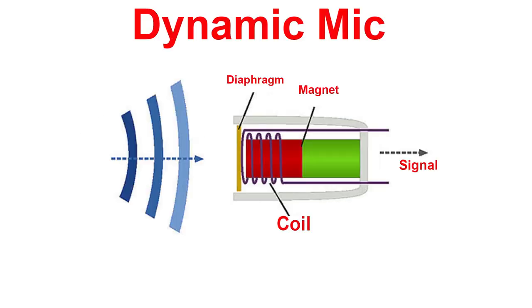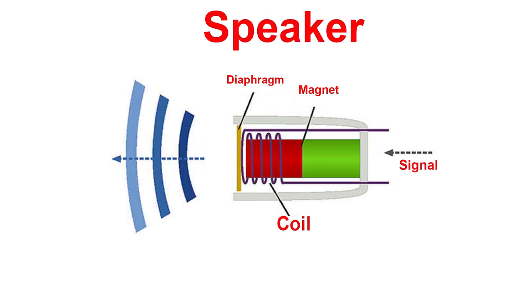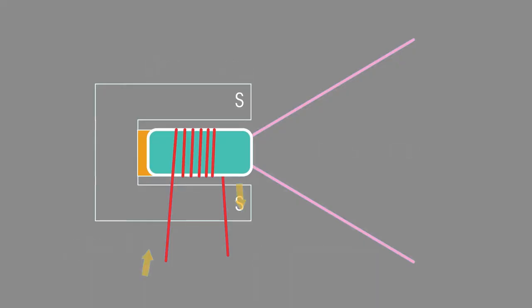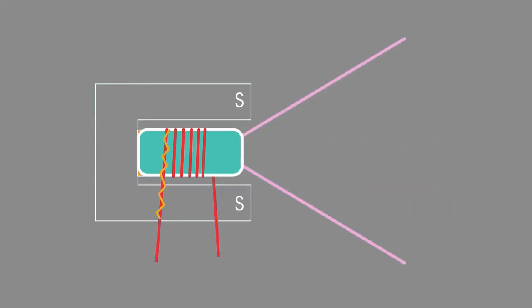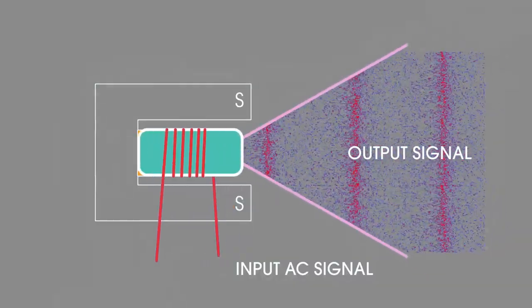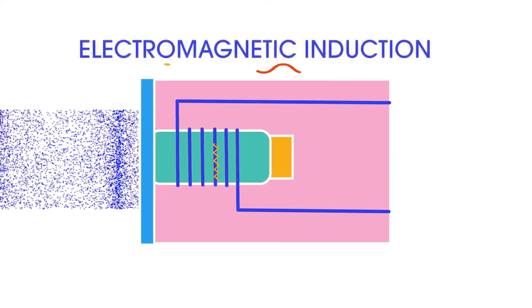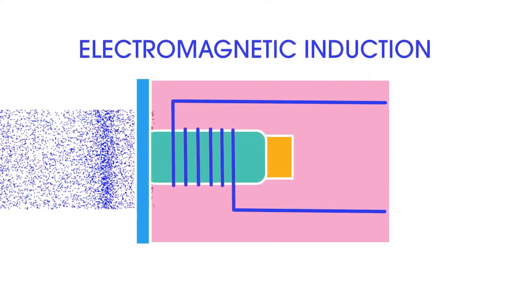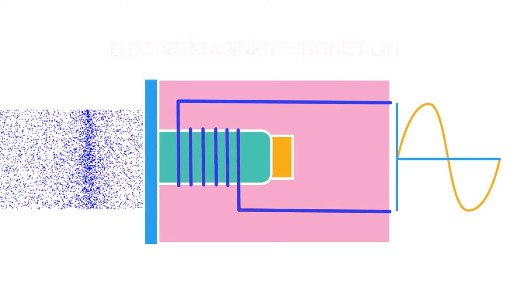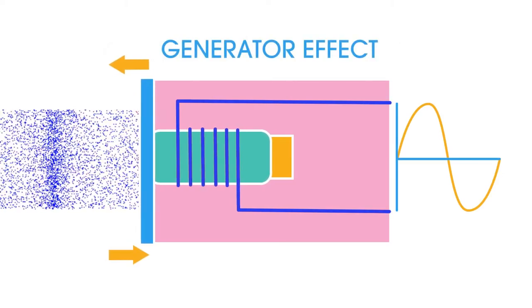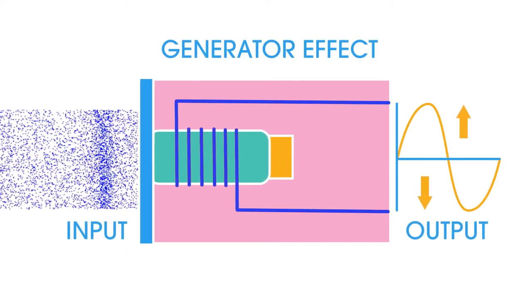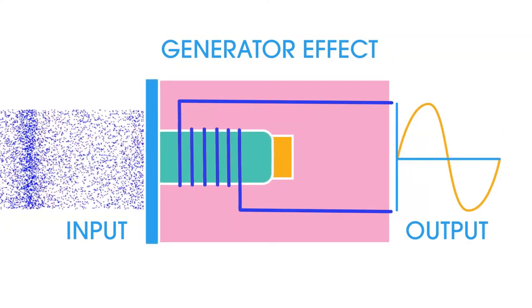Let's first understand the dynamic mic. A dynamic mic is actually a speaker. As we know, a speaker produces sound when an electrical signal is received — a dynamic mic does the reverse, producing an electrical signal from sound. When sound waves from the air hit the mic's diaphragm, the coil attached to the diaphragm moves back and forth over the magnet, which produces the electrical signal of the sound.